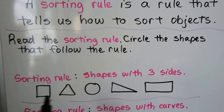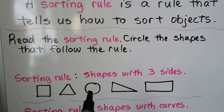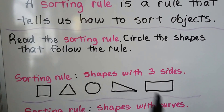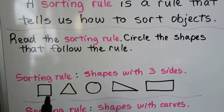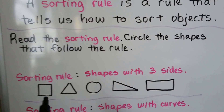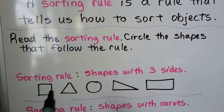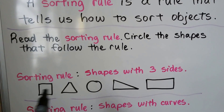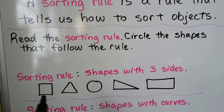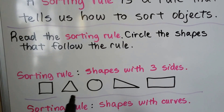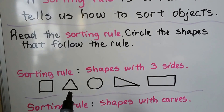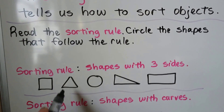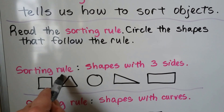We have a square, a triangle, a circle, another triangle, and a rectangle. A square has four sides: one, two, three, four — so it's not the square. The triangle has one, two, three sides, so we can circle that one.